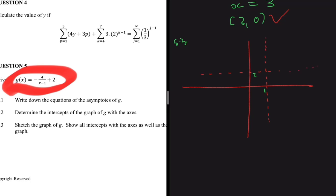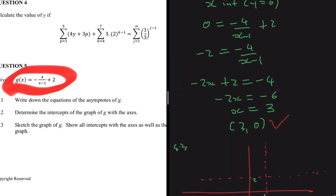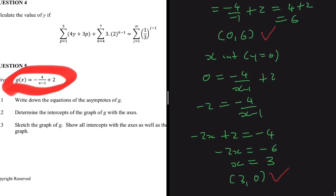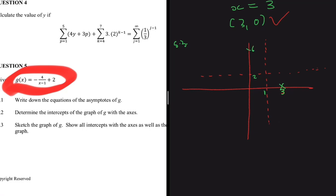The intercepts determine where the two branches of our hyperbola lie. The x-intercept is at x equals 3, so one branch must cut through (3, 0). The y-intercept is at y equals 6, so the other branch cuts through (0, 6). Both branches must approach but never touch the asymptotes, giving us our completed hyperbola sketch.